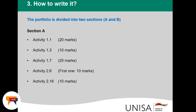How to write the portfolio. This portfolio is divided into two sections, Section A and Section B. In order to pass this module, since this portfolio is your exam, you must submit both sections. Section A consists of Activity 1.1 for 20 marks, Activity 1.3 for 10 marks, Activity 1.7 for 20 marks, Activity 2.6 (the first one) for 10 marks, and Activity 2.16 for 10 marks. Let me take you through each activity.